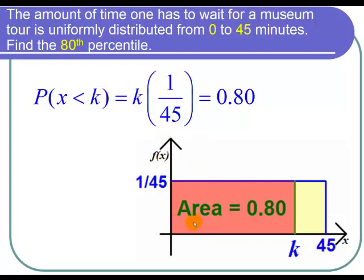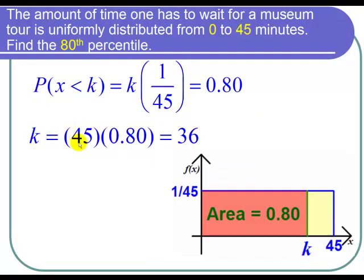Secondly, we know from before the area is supposed to be 0.80. So now I can solve this by multiplying left and right by 45, and I get k equals 45 times 0.80, and I arrived at 36 when I calculated this.